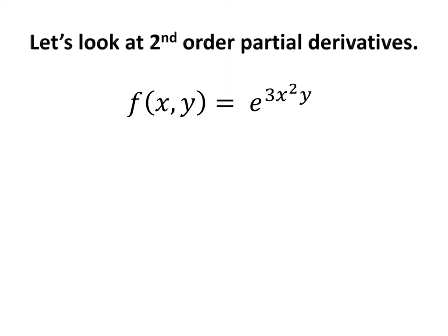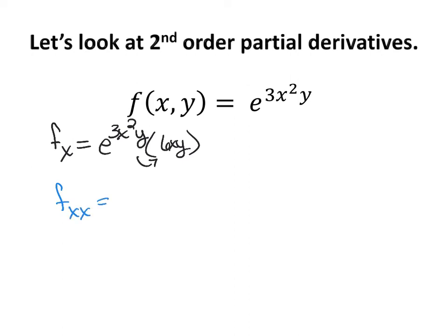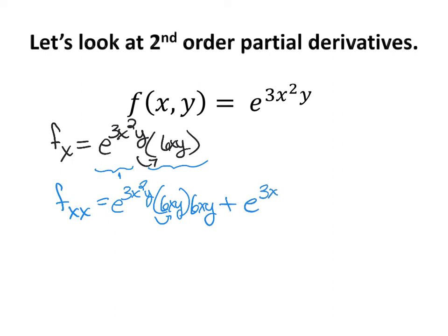Let's take a look at second order partial derivatives with this exponential. f sub x equals the function exactly as it is times the chain rule derivative with respect to x, giving 6xy. Now we take that first order result and differentiate again with respect to x. Notice we have two functions multiplied, so we need the product rule. We take the derivative of the first — which is e to the 3x squared y, chain ruled out to give 6xy — times the second, plus the first times the derivative of the second. The derivative of 6xy with respect to x is 6y. This results in a super complex-looking expression.